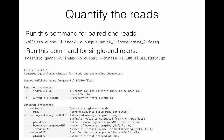Quantifying the reads is also simple. You invoke Kallisto at the command line with kallisto quant, dash-i, you give it the name of the index, dash-o, the name of your output file, and then you give it your two paired-end FASTQ files. There are a number of other options. You can specify the number of bootstraps with dash-b, and the number of threads for bootstrapping with dash-t. This step takes about 10 to 15 minutes for a paired-end run with 30 million reads in a single sample.